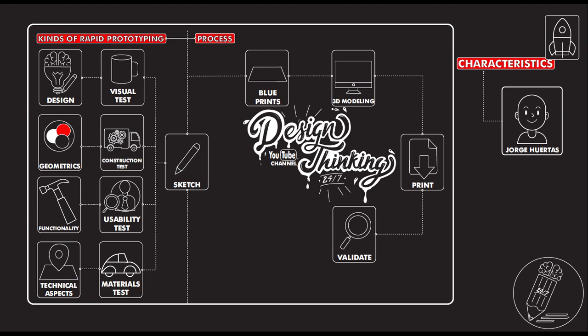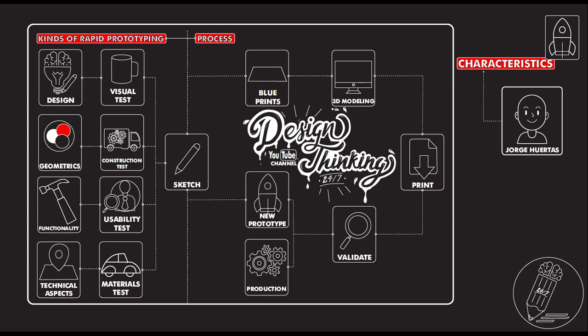After that, when you already have your model printed, you have to validate. There are two possible scenarios. How do you validate? You have to make a focus group, take the users, and make a protocol. With that protocol you will find out if the product is perfect — meaning it can go to production.